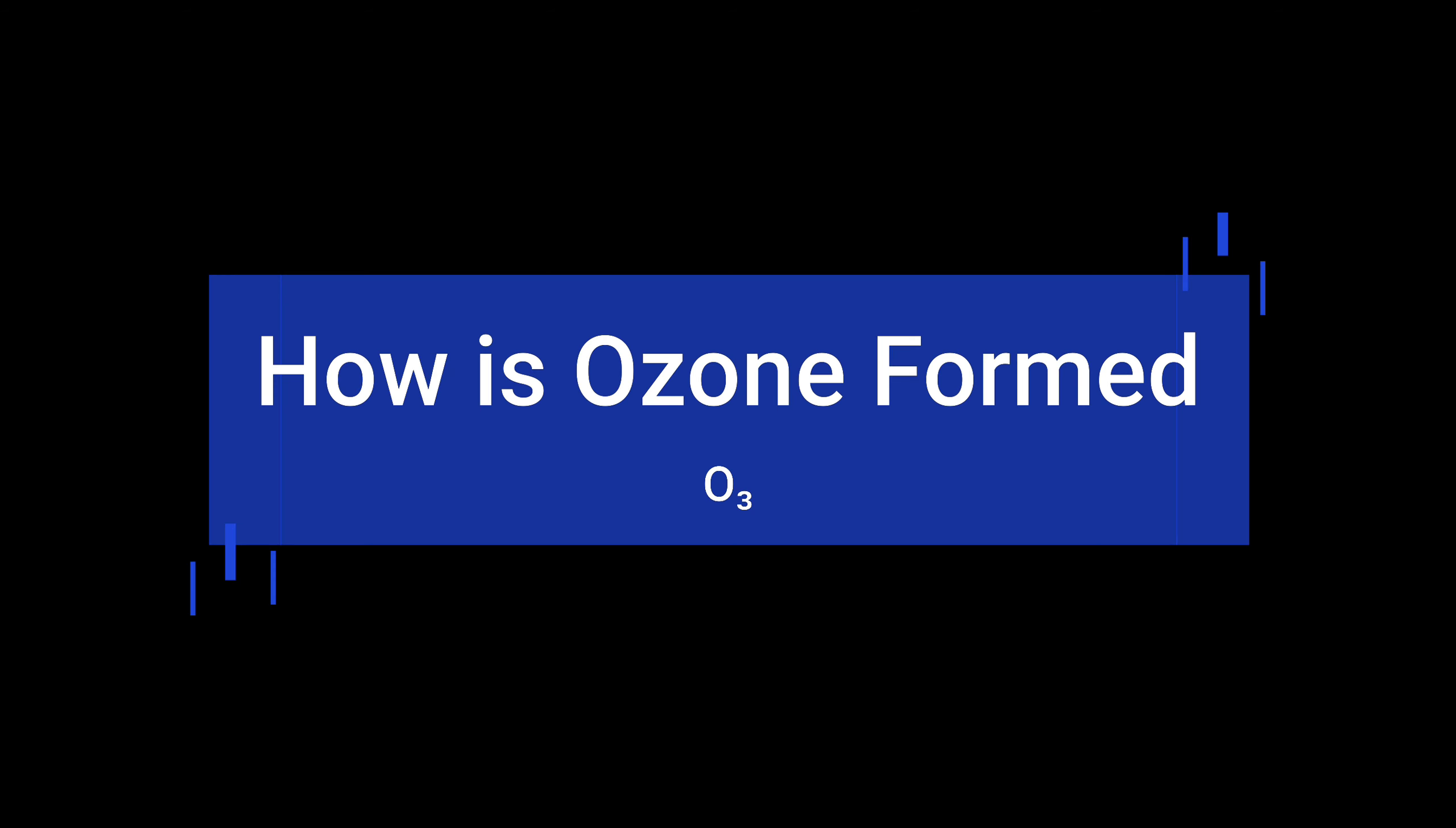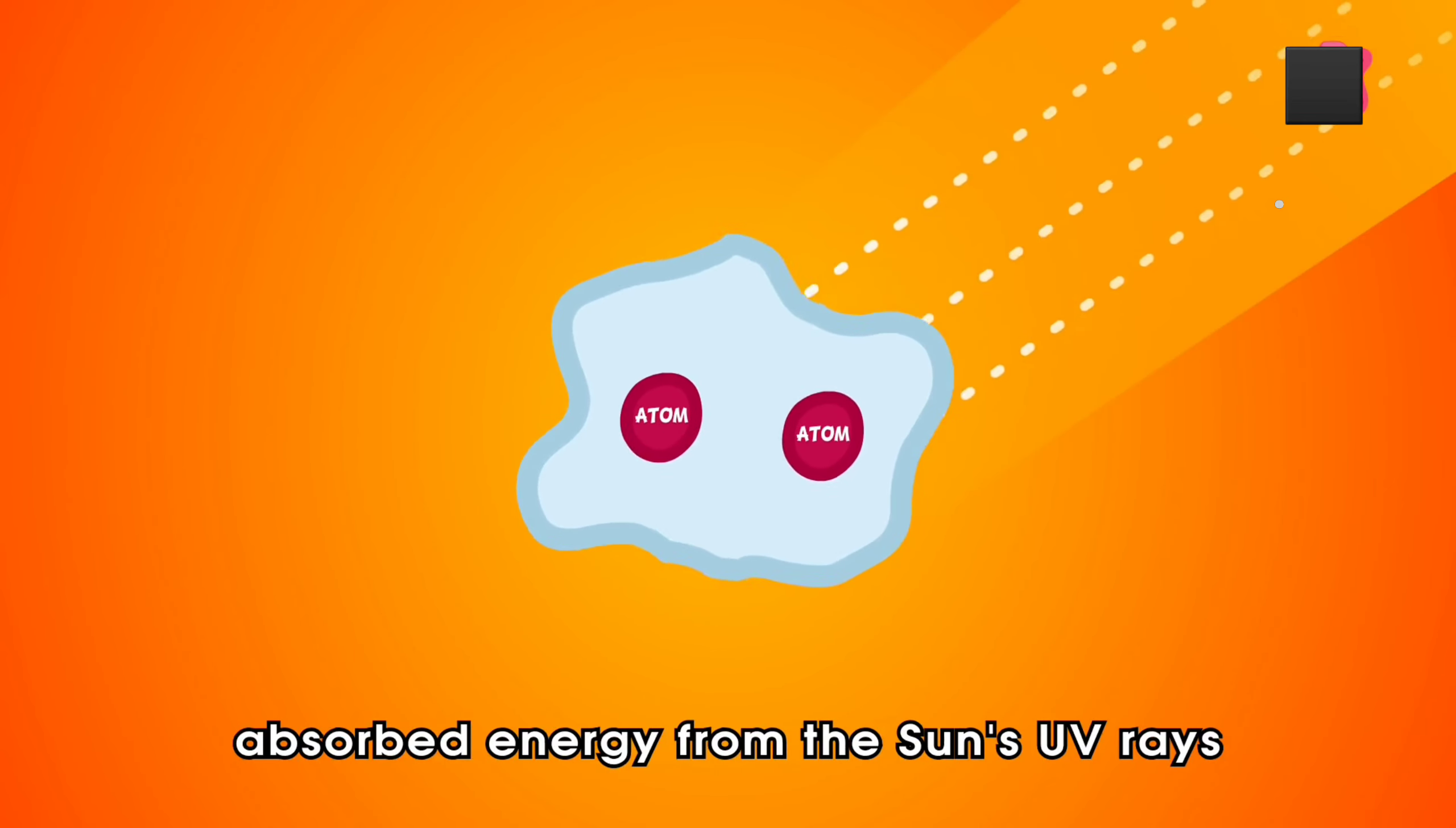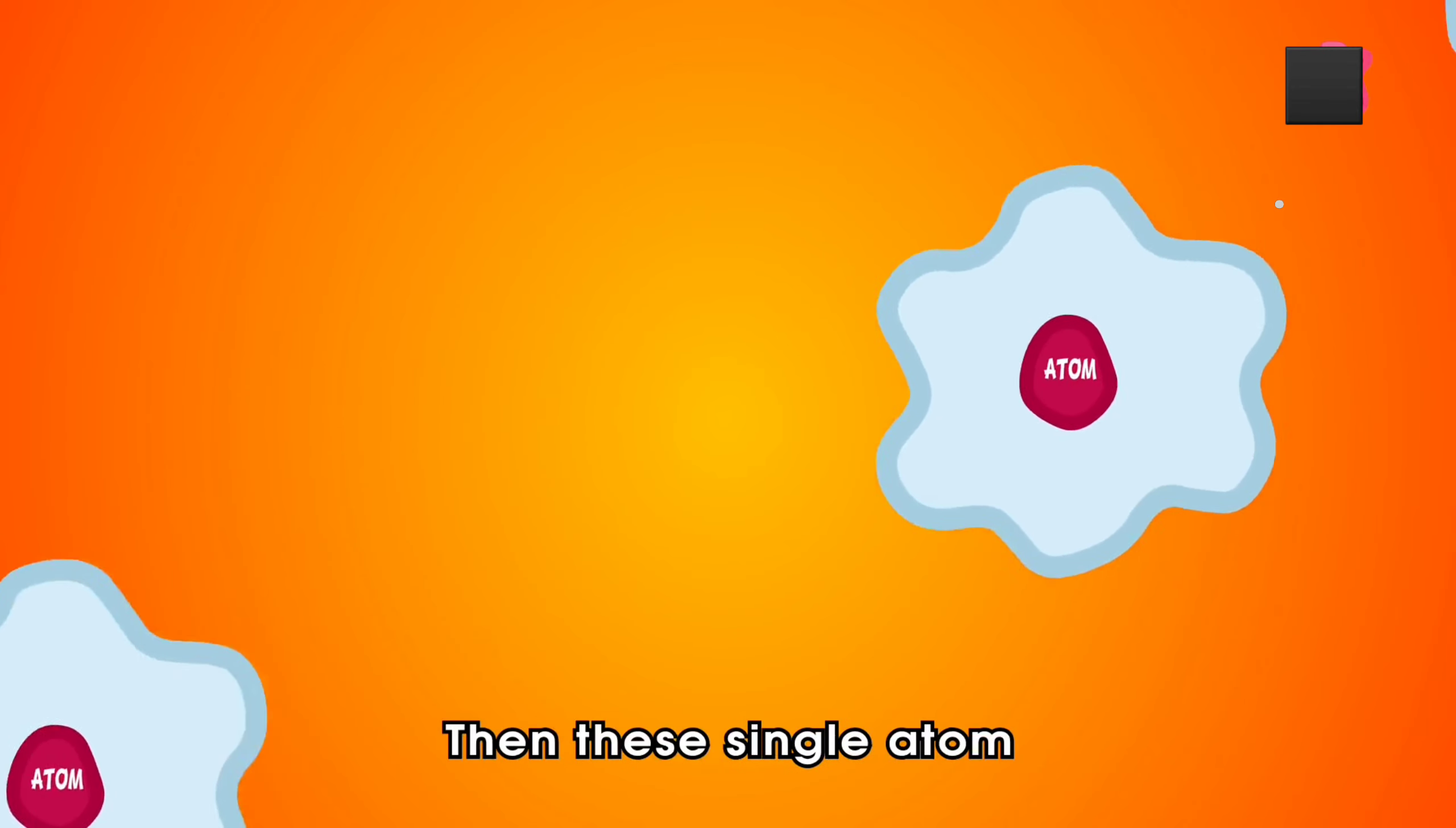How is Ozone formed? The higher energy UV radiations split apart some molecular oxygen or O2 into free oxygen atoms. These atoms then combine with a molecular oxygen to form Ozone as shown in the video.